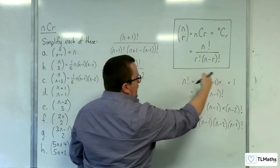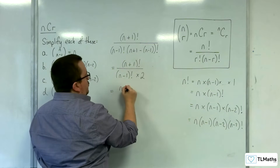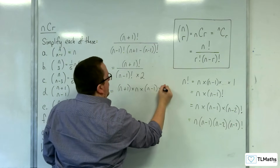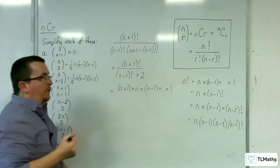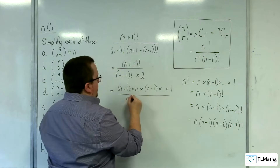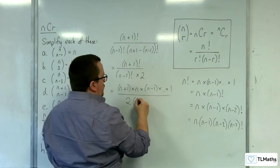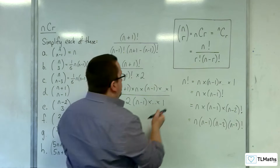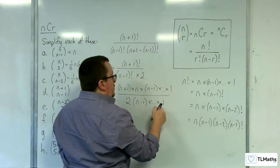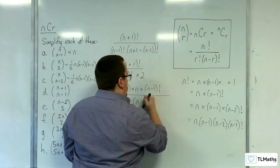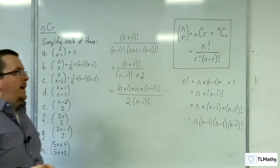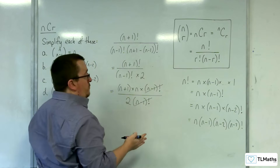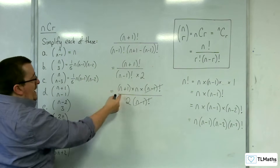N+1 factorial is N+1 times N times N-1 times ... all the way down to 1. In the denominator we have 2 lots of N-1 factorial. The N-1 factorials cancel, and we're left with one half of N times N+1.